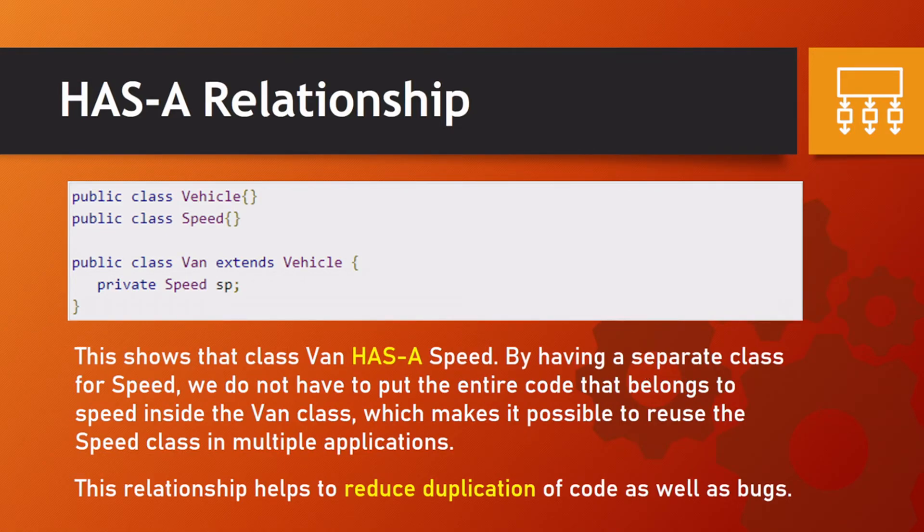For example, class Speed has other attributes - it has instance speed, it has average speed. So you don't have to rewrite that and put it in the Van class. You just extend it or add it there and then you can use it. For example, if there are others that will use it, you can reuse that Speed class - we have SUV, we have Bike, all of them can just use Speed. This relationship helps us reduce duplication of code as well as bugs, so your code doesn't get too long and duplication is reduced.